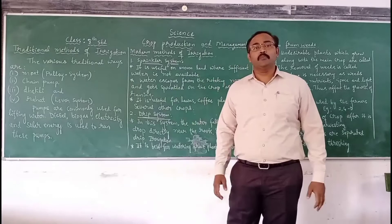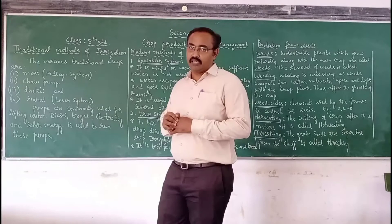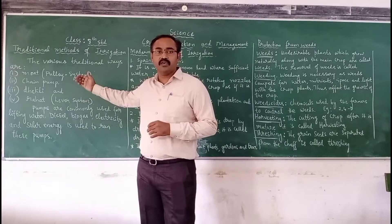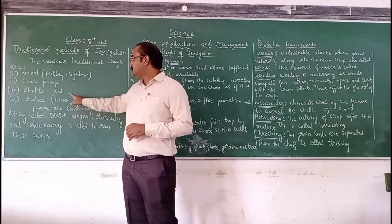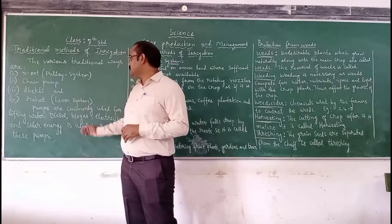Friends, after learning about irrigation, now let us know the traditional methods of irrigation. There are mainly four traditional methods we follow. The first is the moat or the pulley system. The second one is the chain pump. The third one is the dhekli, and the fourth one is the Rahad, which uses a labor system.